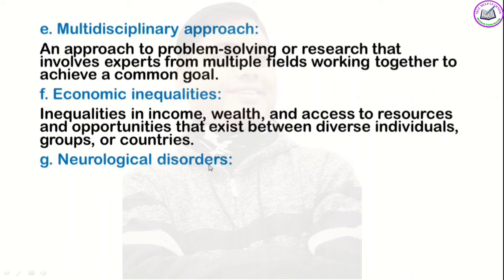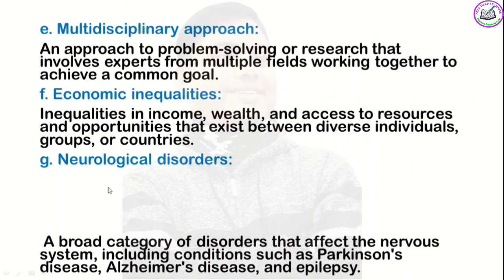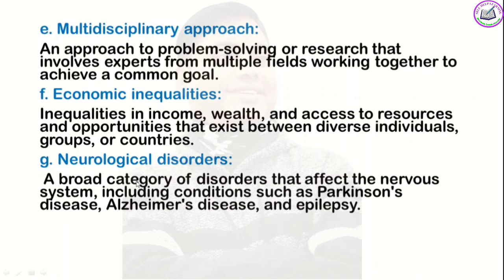'Neurological disorders' — neurology means related to the mind or neuro system, and disorders means problems. The definition is: a broad category of disorders that affect the nervous system, including conditions such as Parkinson's disease, Alzheimer's disease, or epilepsy.